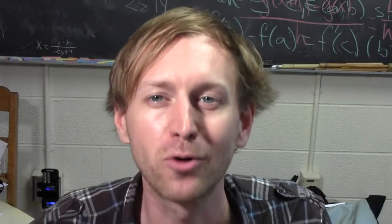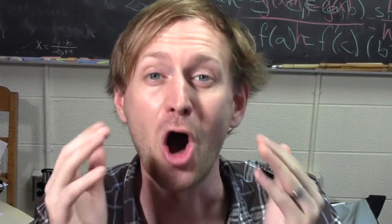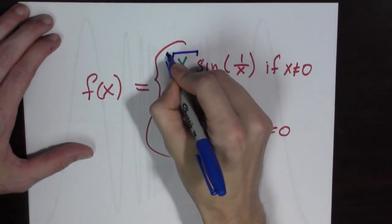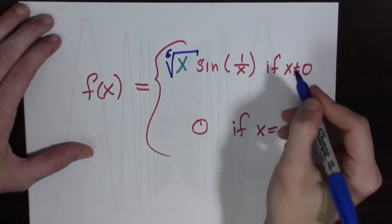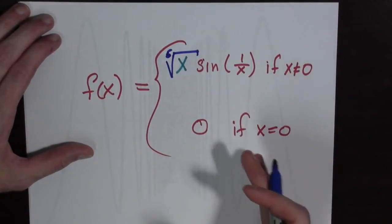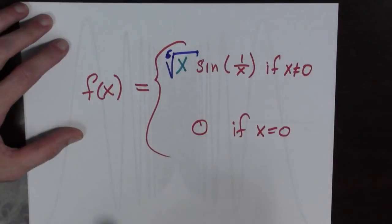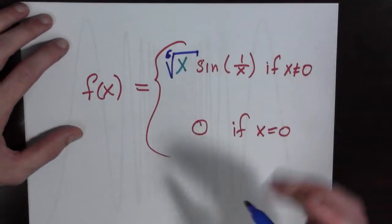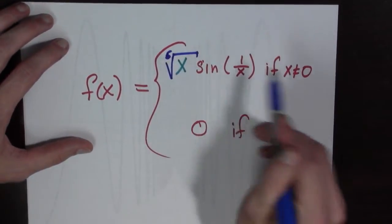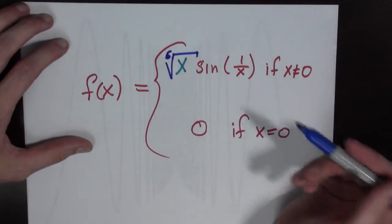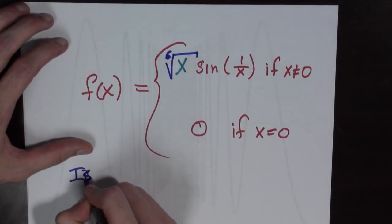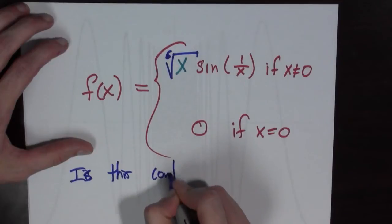So we've seen a wild continuous function. Are there others? Yes. Consider f of x equal to the fifth root of x times sine of 1 over x if x is not equal to 0, and 0 if x equals 0. This function is going to be continuous everywhere except possibly at 0, because 1 over x, sine, and the fifth root of x are all continuous everywhere else. So is this continuous at 0?